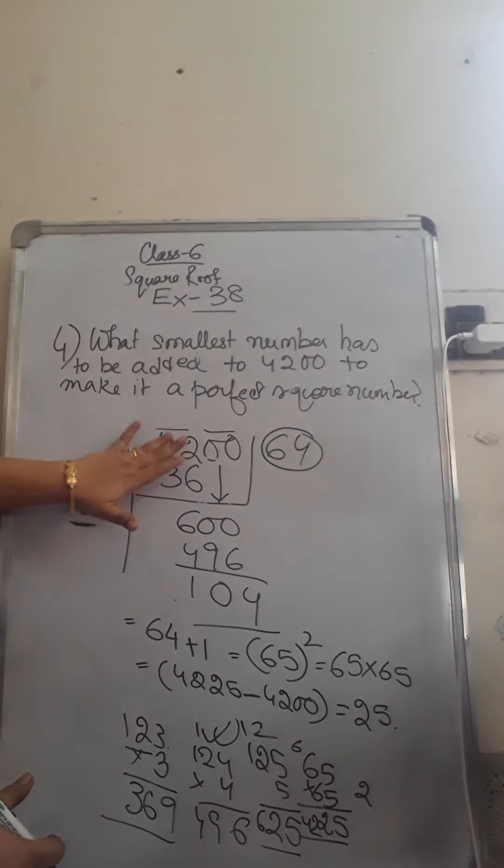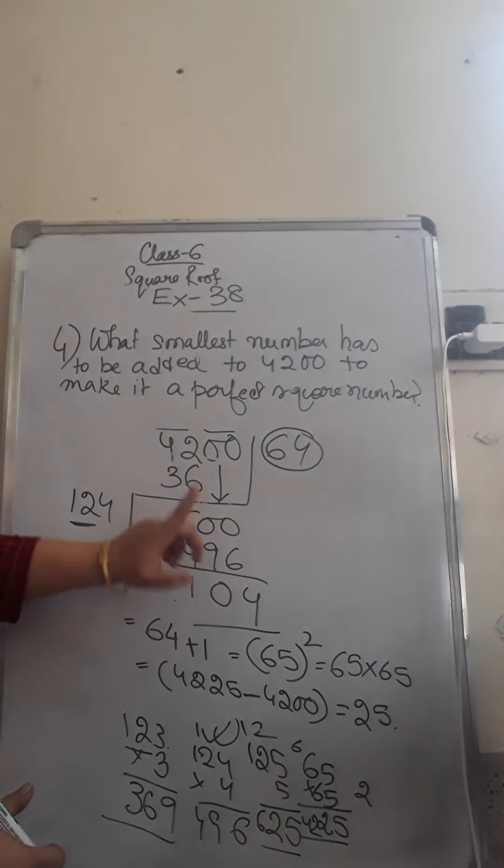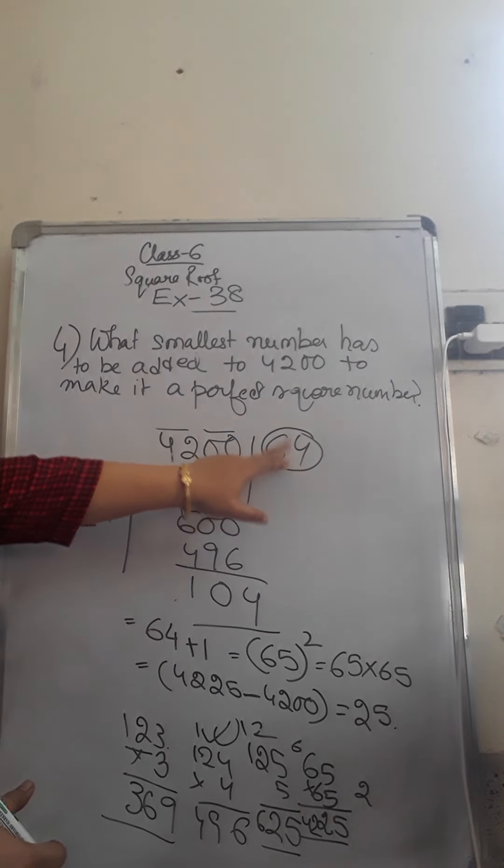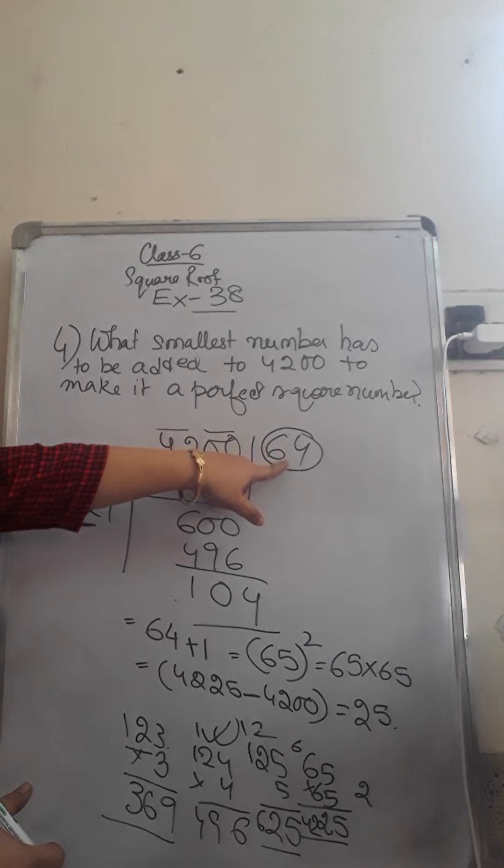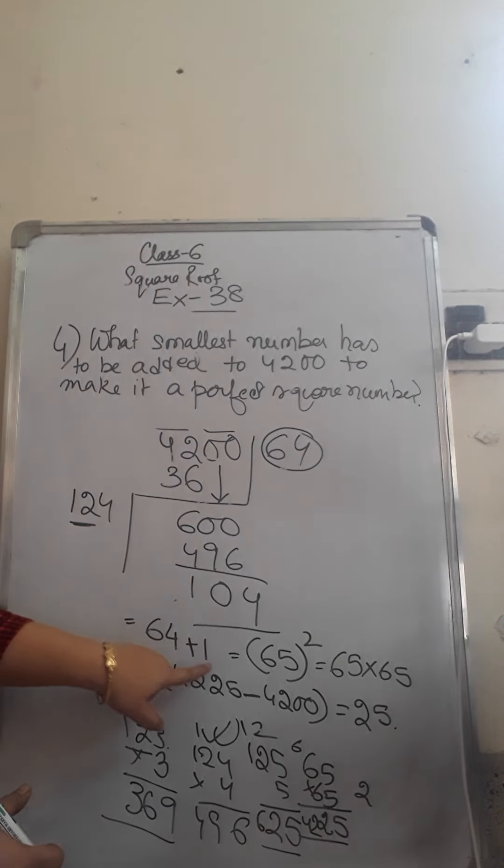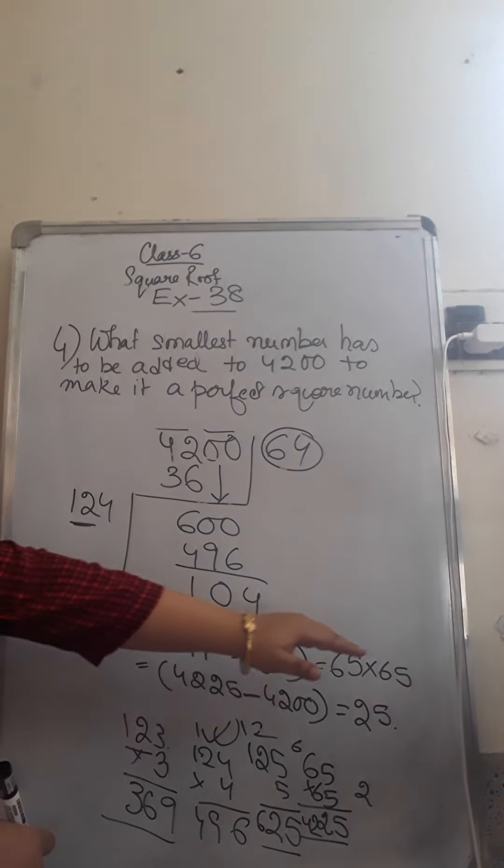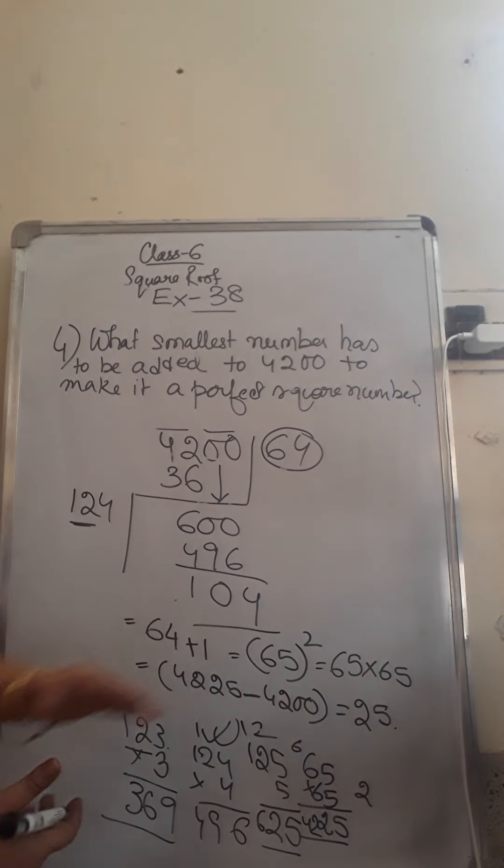So 4200 we will find by division method. When we are getting remainder, it is proved it is not a perfect square. Then quotient, whenever the question is what should be added, what you have to do, take the next number. Quotient, if it is 64, you will take 65. Quotient, if it is 63, you will take 64. And that number's whole square is the next perfect square number.